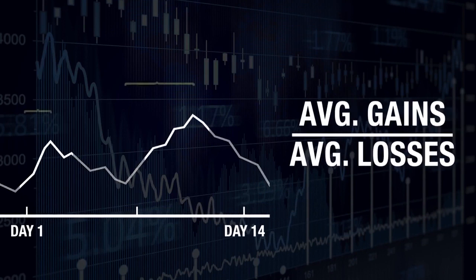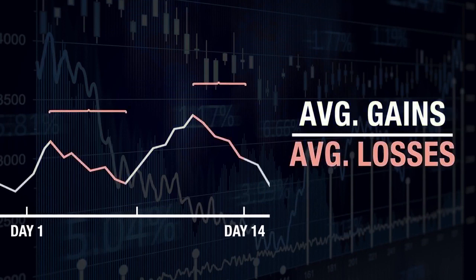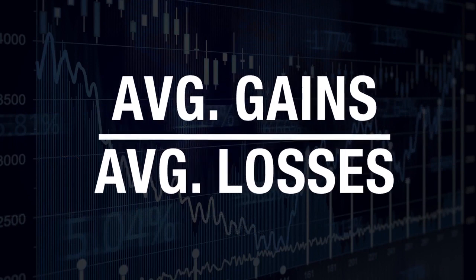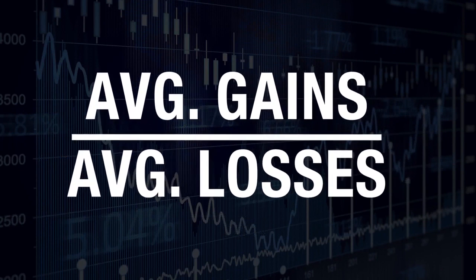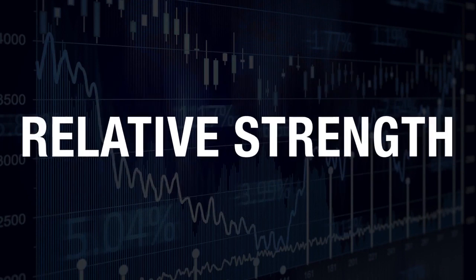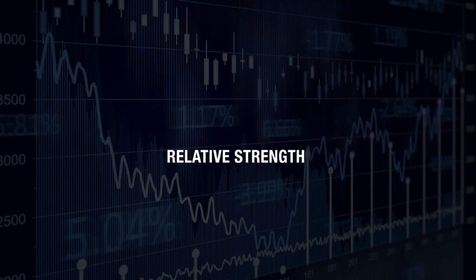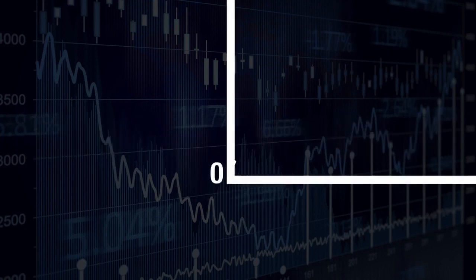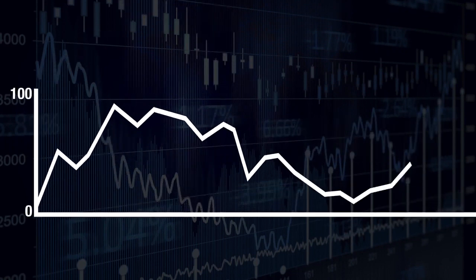Next, add up the average gains and divide by the average losses during your chosen time period. The calculation solution, or value, is referred to as relative strength. The relative strength value is then plotted on a graph between 0 and 100.